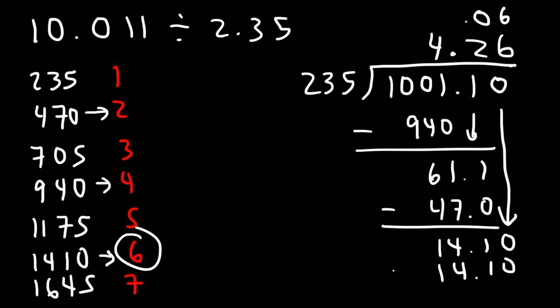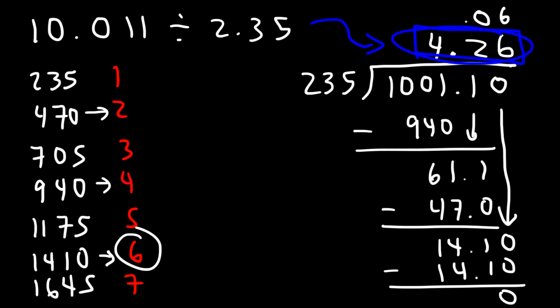With a remainder of zero, our final answer is confirmed. If you type in 10.011 divided by 2.35, you get 4.26. That's how you divide decimal numbers using long division — thanks for watching.